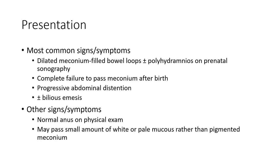The most common signs and symptoms include dilated bowel loops, plus or minus polyhydramnios on prenatal sonography, complete failure to pass meconium after birth, progressive abdominal distension, plus or minus bilious emesis. Other signs may include passage of small amounts of white or pale mucus rather than pigmented meconium.